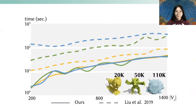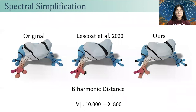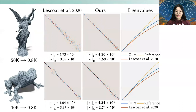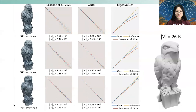Our method can also improve results from spectral simplification as a post-processing step. Our bi-harmonic distance is closer to the ground truth than Lescoat and colleagues' work in 2020 using the same sparsity pattern. When coarsening is aggressive, our method can still post-process Lescoat and colleagues' results to improve spectral preservation quality. We show more examples of our improvements across different resolutions of the coarse mesh.